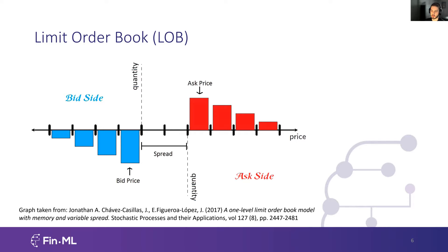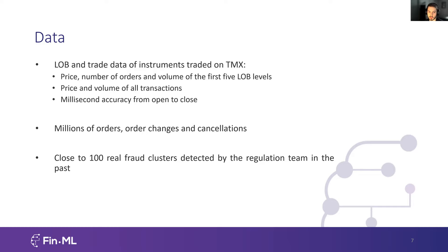The LOB has a bid side on the left, where limit orders to buy the security reside, and an ask side on the right, where sell orders reside. In this case we have four different limit order book levels, where each level specifies a certain price. The data includes the limit order book for multiple instruments and multiple days traded on TMX, as well as transaction data. Overall we have the price, number of orders, and volume for the first five levels of the LOB, plus the price and volume for all transactions, at millisecond accuracy.